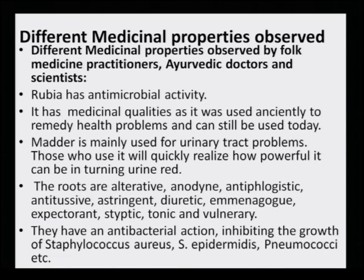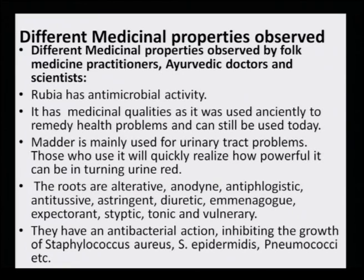Rubia has antimicrobial activity and medicinal qualities used anciently to remediate health problems that can still be applied today. Madder is mainly used for urinary tract problems. The roots are alterative, anodyne, antiphlogistic, antitussive, astringent, diuretic, expectorant, styptic, tonic and vulnerary. They have an antibacterial action inhibiting groups of bacteria such as Staphylococcus and various Staphylococcus species as well as Pneumococcus.